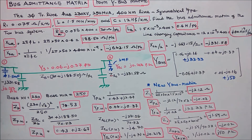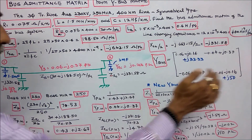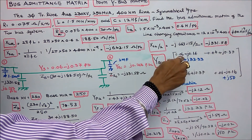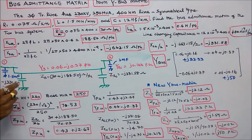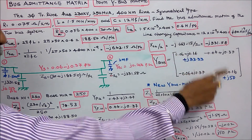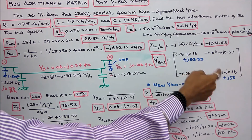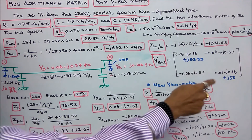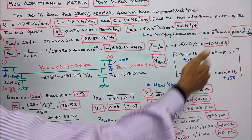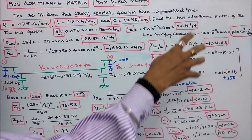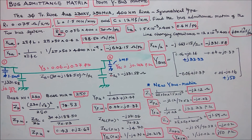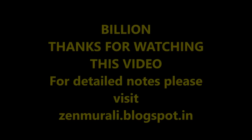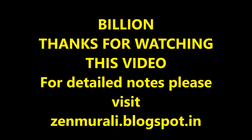The new diagonal elements are: Y₁₁_new = (0.06 − j0.16) + j33.33, and Y₂₂_new = (0.06 − j0.16) + j50. The off-diagonal elements remain unchanged. This is the modified Y-bus matrix. With this I conclude my lecture, thanks for listening.